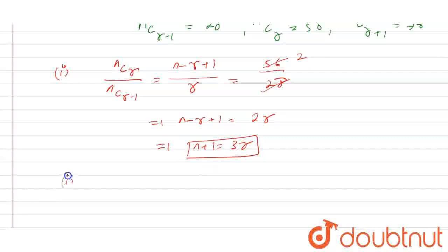Now, another relation we know is nC(r+1) / nCr = (n-r) / (r+1). And this is equal to 70 upon 56.